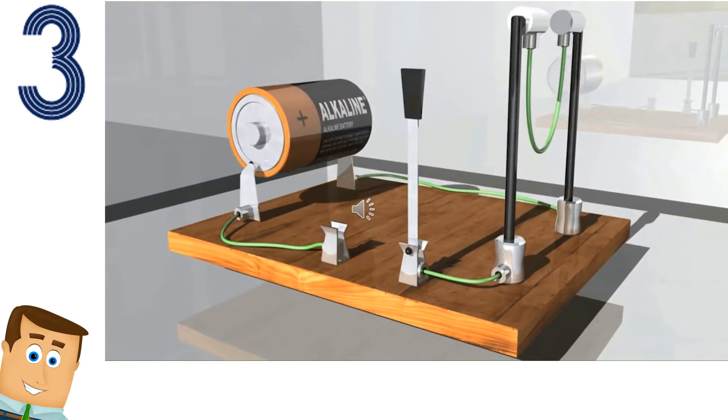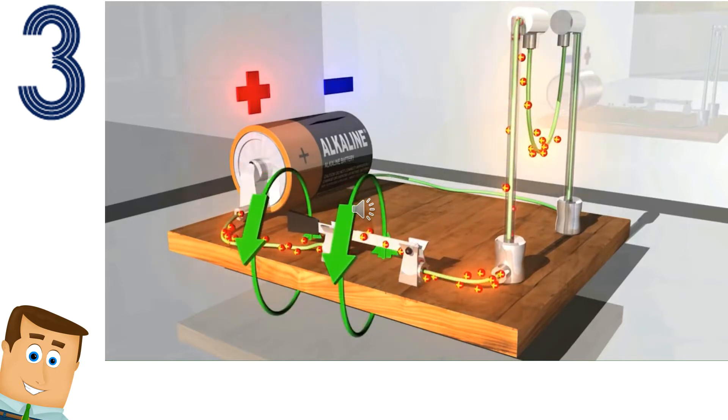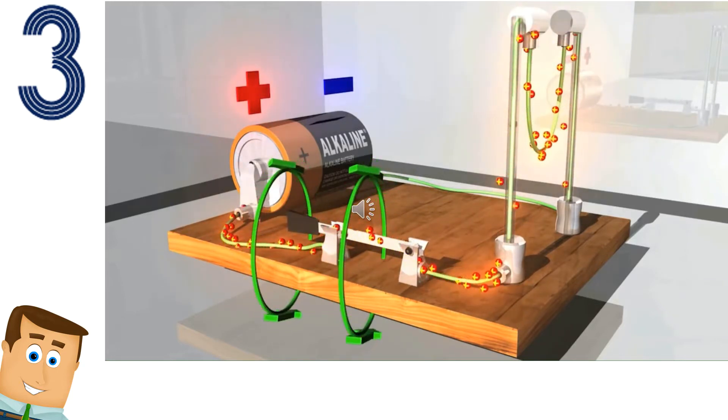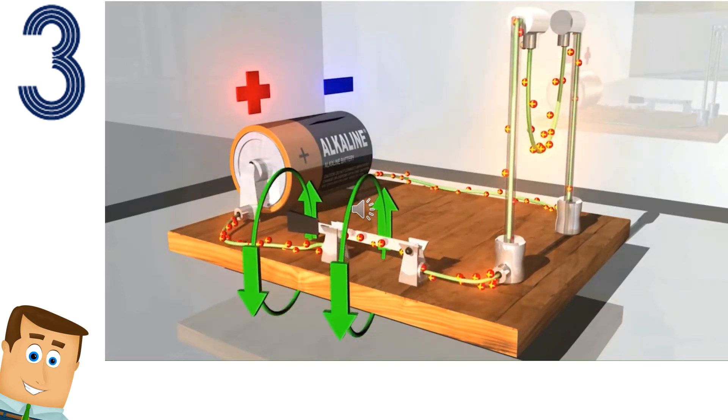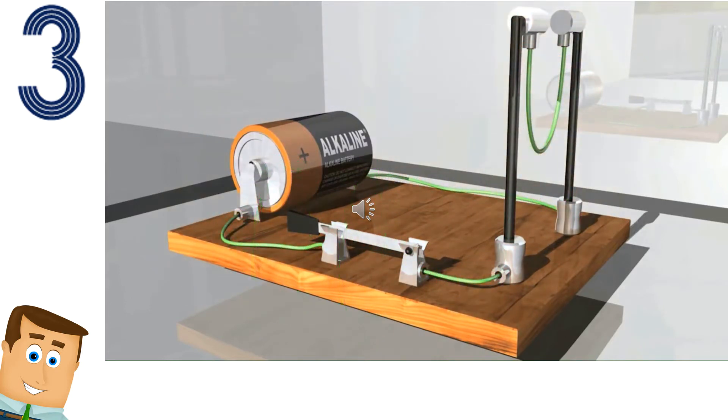Al cambiar la polaridad de esta batería, la corriente convencional también va a hacer que el campo magnético gire al revés.